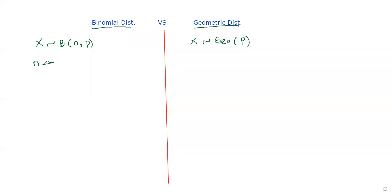In the binomial distribution, n has to be determined — it must be provided and known. In the geometric distribution, n is unknown and can go up to infinity.